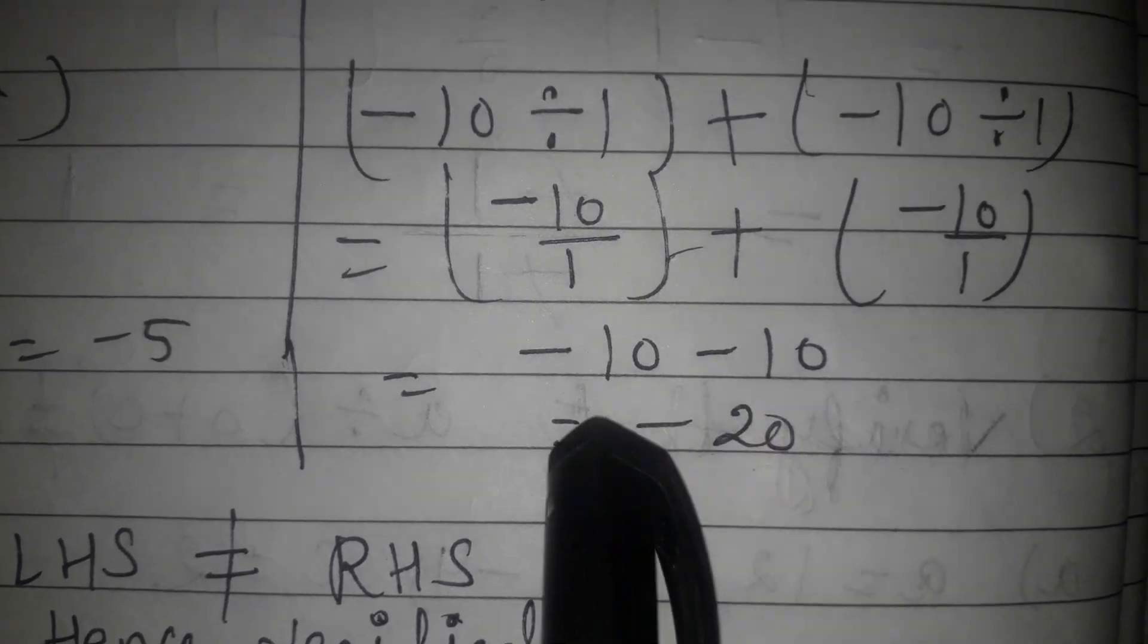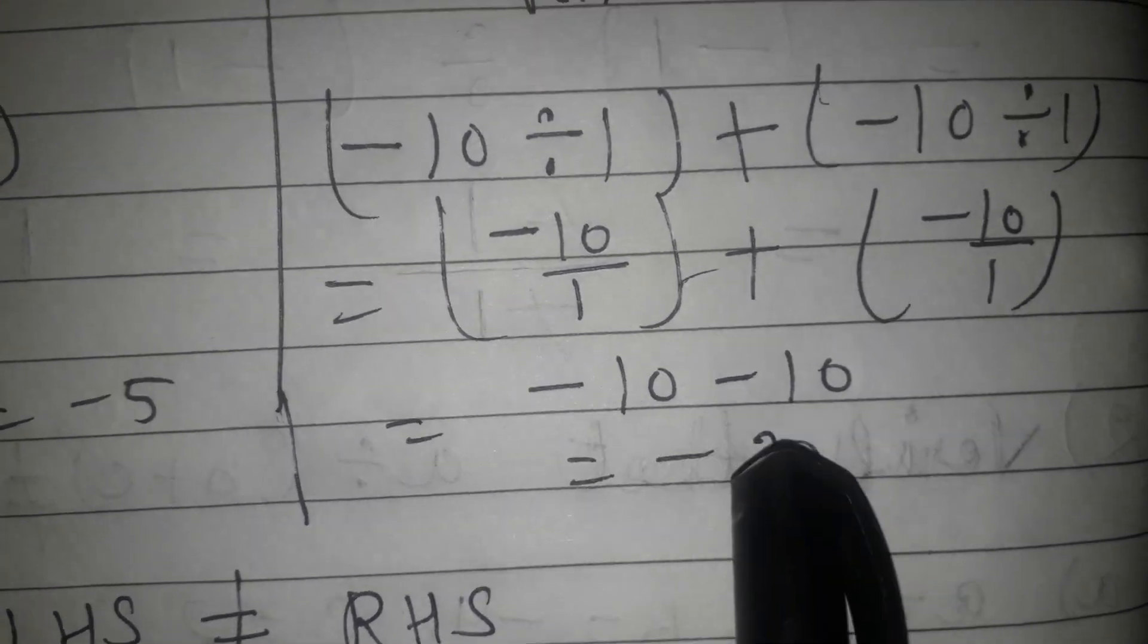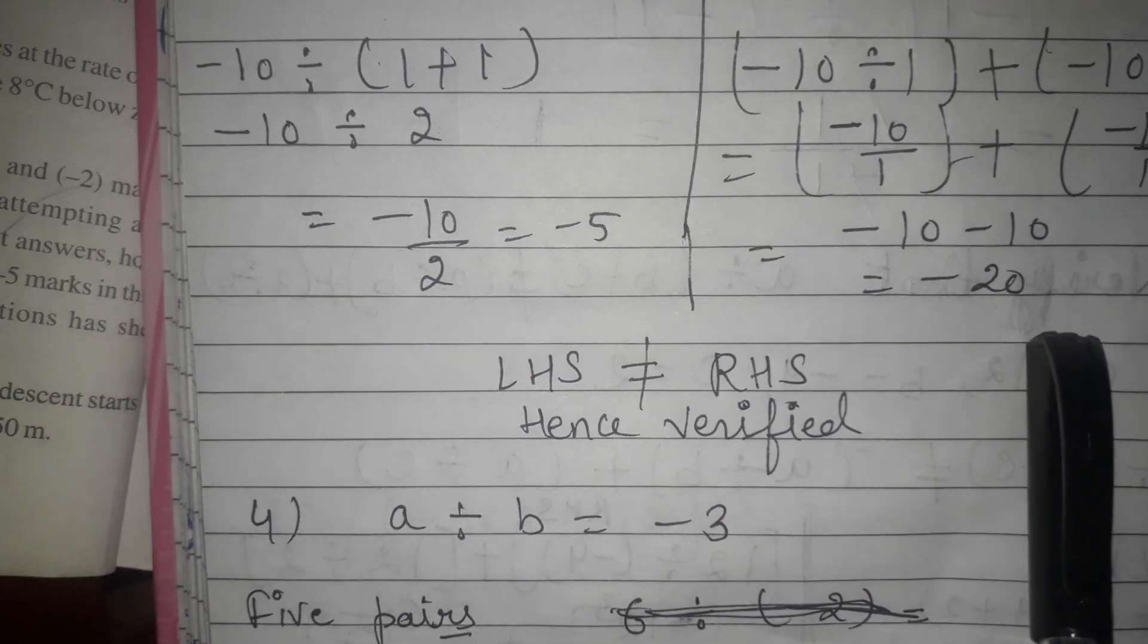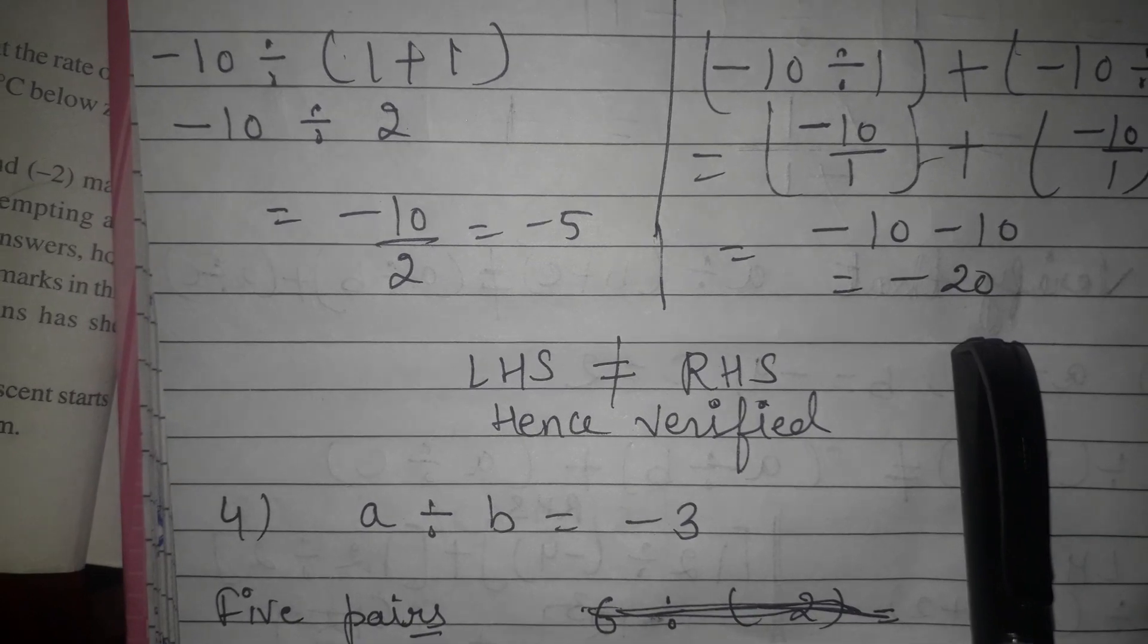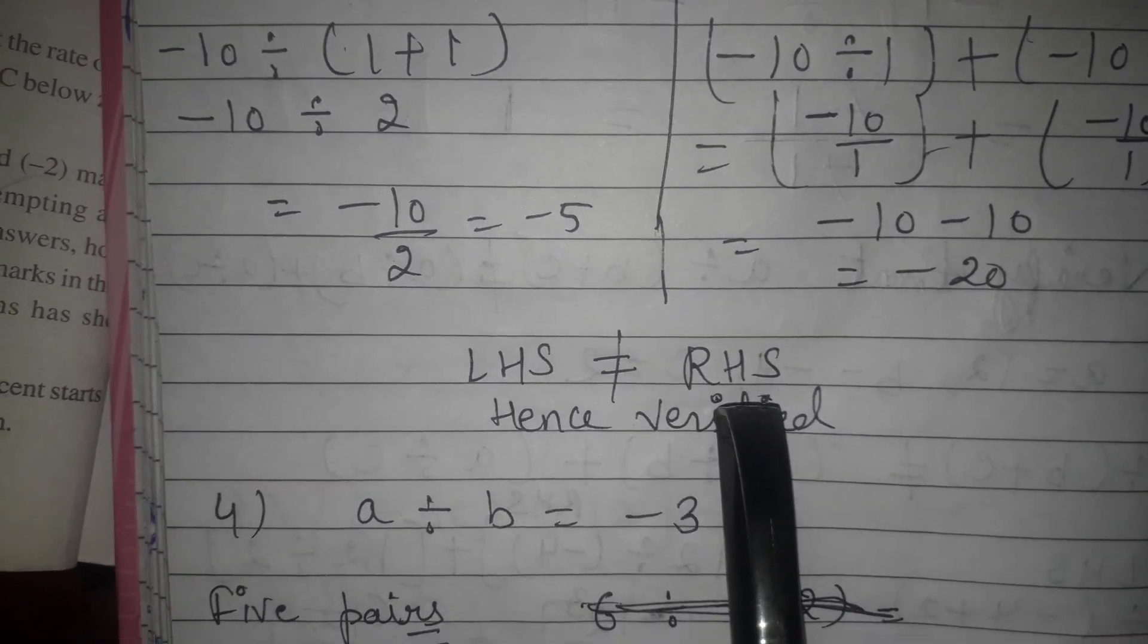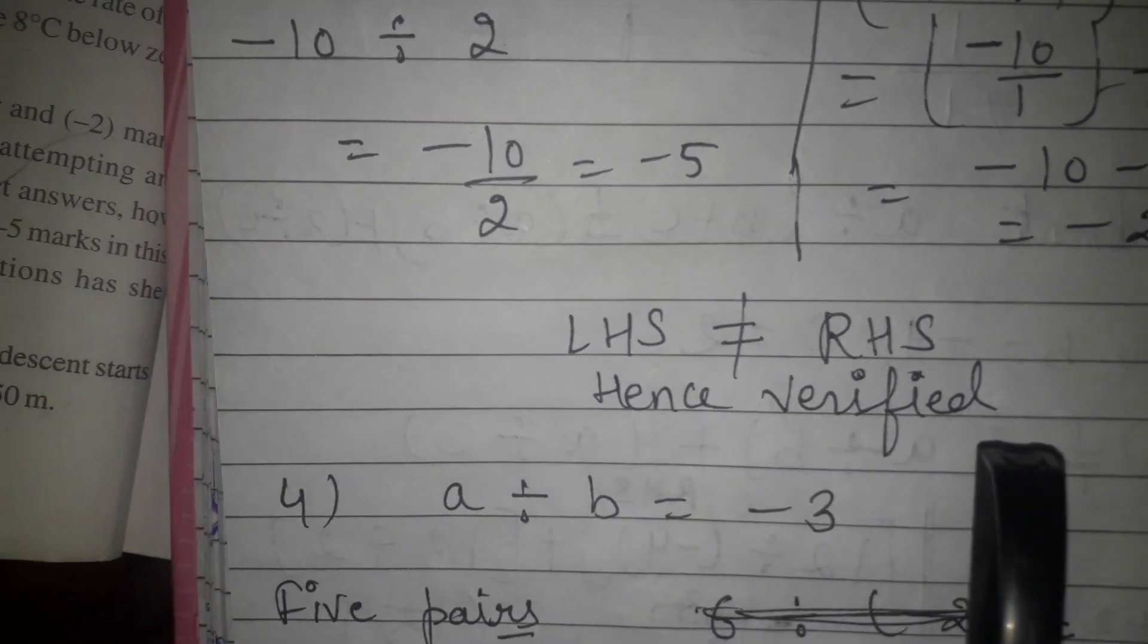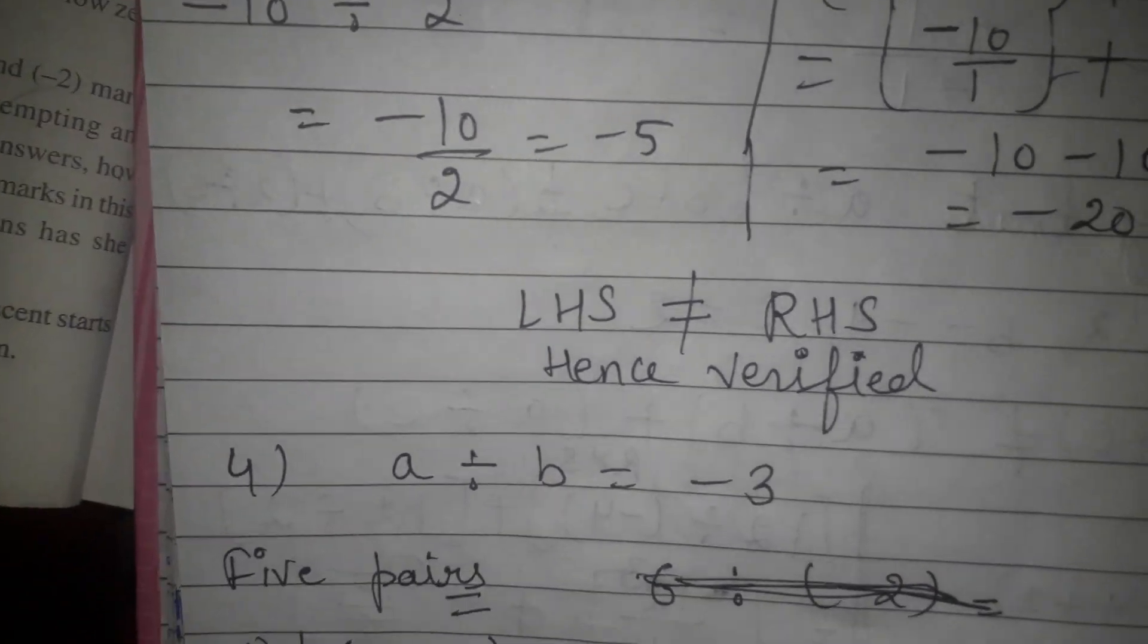Now, look at the value of LHS: minus 5. Look at the value of RHS: minus 20. LHS is not equal to RHS, hence verified that we have to show that LHS and RHS will not be same, which I have shown.